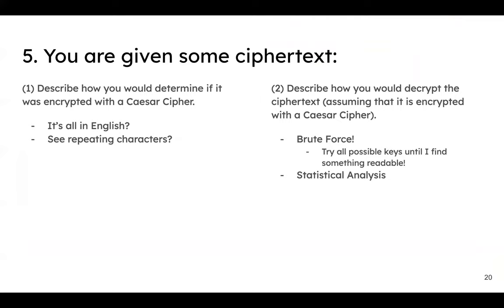This question asks how you'd deal with a Caesar cipher. First, how would you figure out it is a Caesar cipher? Check if the letter distribution looks like you'd expect for English — not necessarily the same letters but the same frequency distribution. It would still appear like English, just shifted if you plot the frequencies. There are only 25 possible keys, so you could just try all of them.